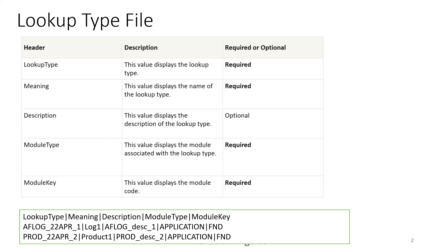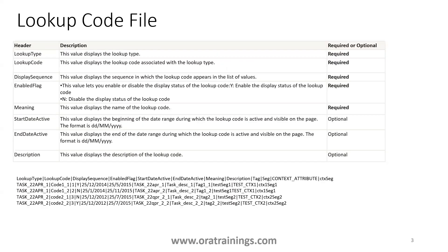The next one is the lookup value file. In the lookup value file, there are a couple more columns. The lookup type here is the parent record information. Lookup code, meaning, display sequence, and enable flag are mandatory. Remaining things are optional.